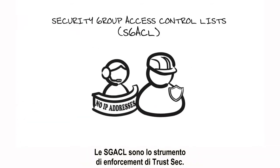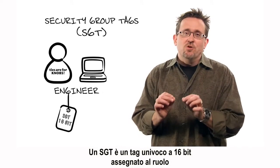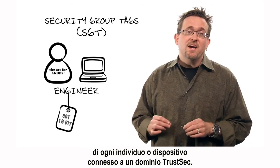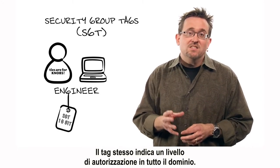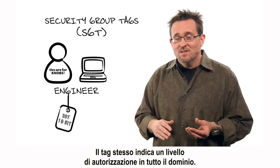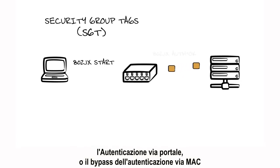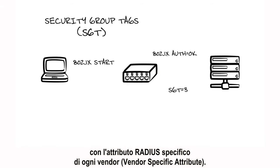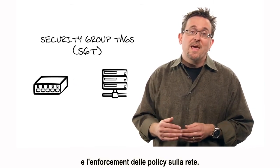SGACLs are the enforcement arm of TrustSec. The advantage of an SGACL over a plain vanilla ACL is that they don't use IP addresses. An SGT is a unique 16-bit tag assigned to each individual role and device that connects it to a TrustSec domain. The tag itself indicates a privilege level across the entire domain. An SGT is passed along dynamically to a switch or an AP after either the 802.1X, the web authentication, or the MAC authentication bypass, which would happen with the RADIUS vendor-specific attribute.